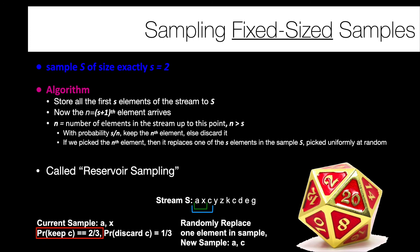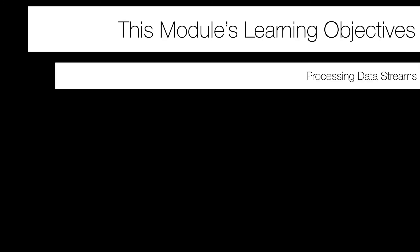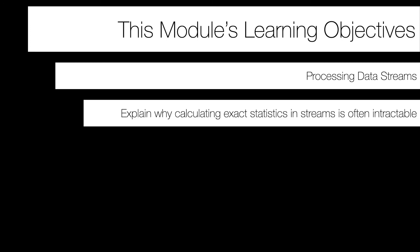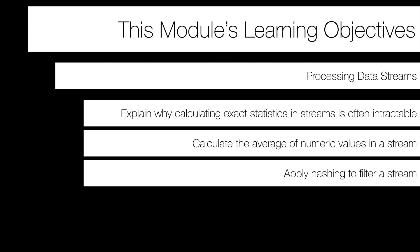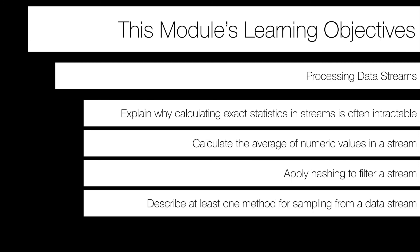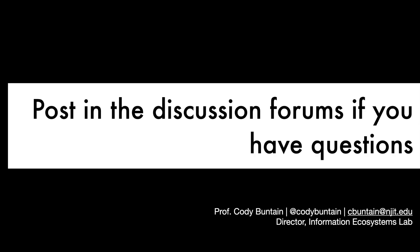Now we've covered all four objectives from the streams module. You should understand why statistics in streams is hard, know methods for calculating the average from a stream and for other statistics like medians via sampling or counting distinct elements. You have a method for applying filtering using hashing, and can describe methods for sampling from a stream. That concludes our streaming module and sets us up for computational advertising in the next chapter. Post any questions to the module 7 discussion forum.